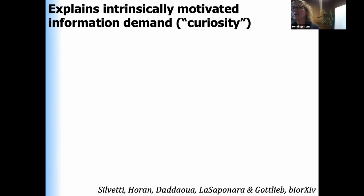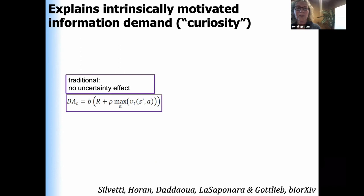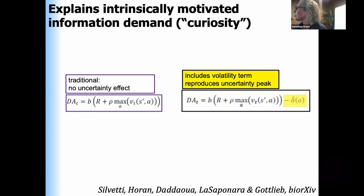In the same framework we can explain intrinsically motivated information demand. In what I've shown so far, information demand is totally a result of reward optimization driven by external reward. But we also have experiments in which animals seek information just as good in itself, not helping them increase external rewards. Massimo modeled this by simply adding a term related to volatility to the traditional dopamine utility function — by trying to minimize volatility, we can also reproduce findings from intrinsic rewards. We're now working on applying this to neural results, which are not immediately intuitive.